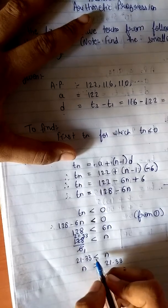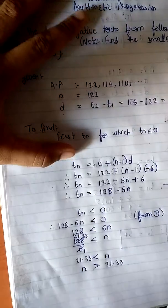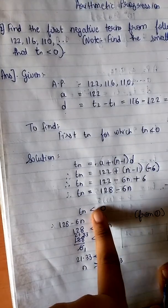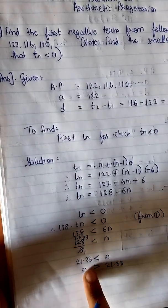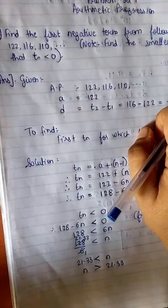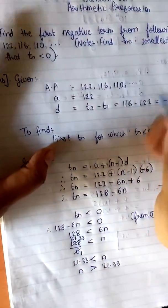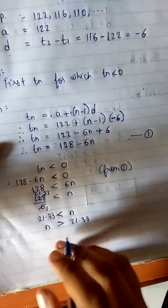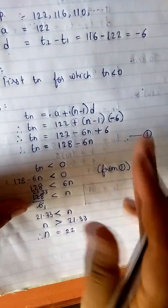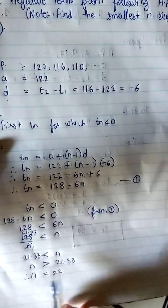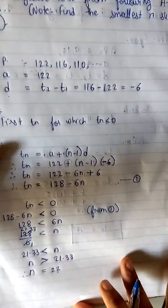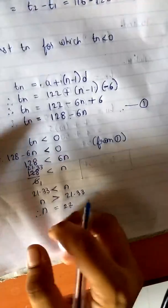We found that n must be greater than 21.33 for Tn to be less than 0. However, n must be a natural number — it cannot be a decimal. We want the smallest such n. The smallest natural number greater than 21.33 is 22. Therefore n = 22 is the smallest value of n for which Tn is negative.